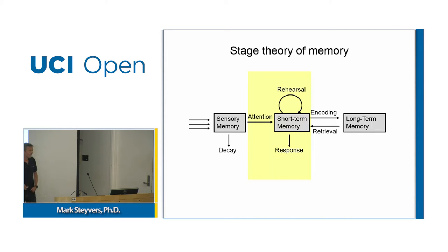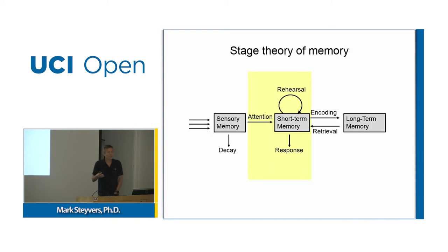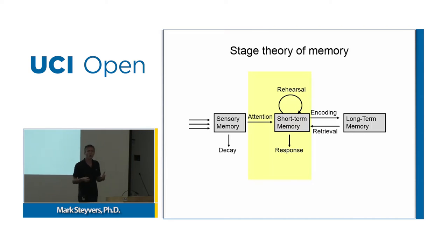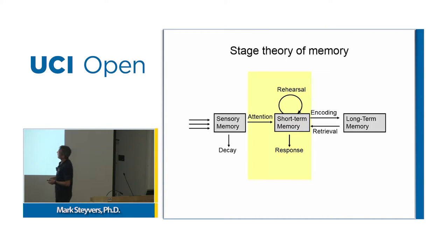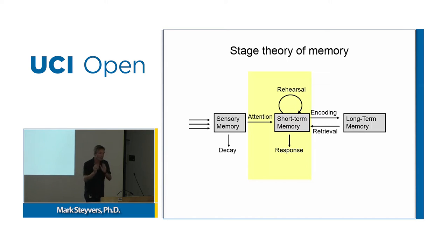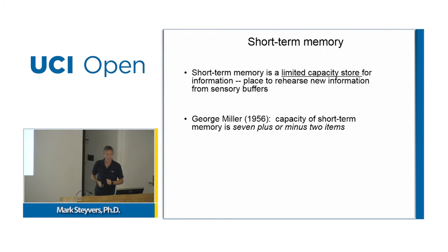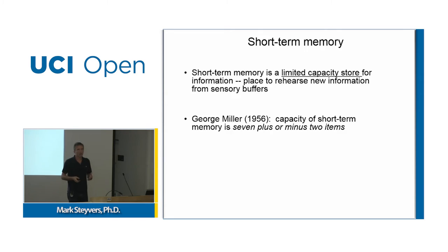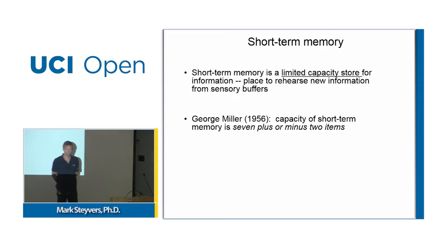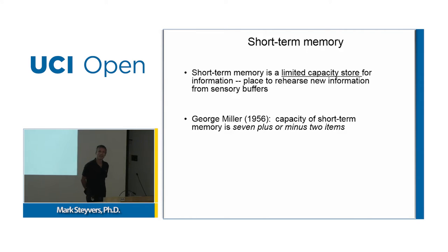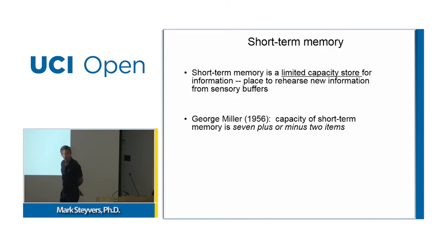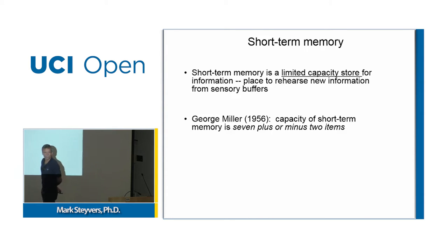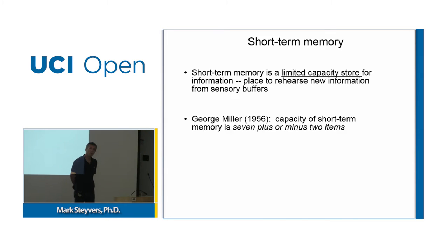The next stage is short-term memory. Only things attended to can enter short-term memory, and short-term memory is thought to be a very limited capacity system — you can only hold on to a few items at a time. Those items need to be actively rehearsed before they can be transferred to long-term memory. George Miller did research estimating the capacity of short-term memory and came up with the famous number 7 plus or minus 2. Few people have a memory span less than 5 or more than 9.